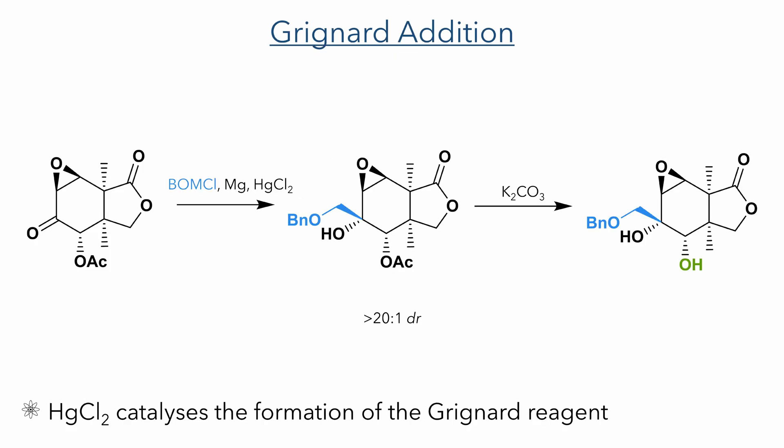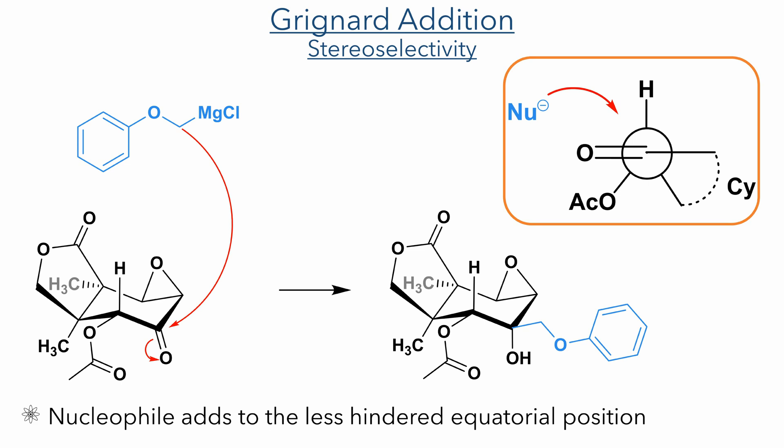The next reaction was a Grignard addition using benzyl chloride to install a benzyl ether group. The formation of this Grignard reagent was catalyzed using mercury chloride. Following this, the acetate group was hydrolyzed to produce an alcohol syn to the alcohol produced by the Grignard reaction. As with the previous reactions, the Grignard addition was stereoselective with a 20:1 DR, which we can explain by looking at the Newman projection and seeing that the nucleophile adds to the less hindered equatorial position.